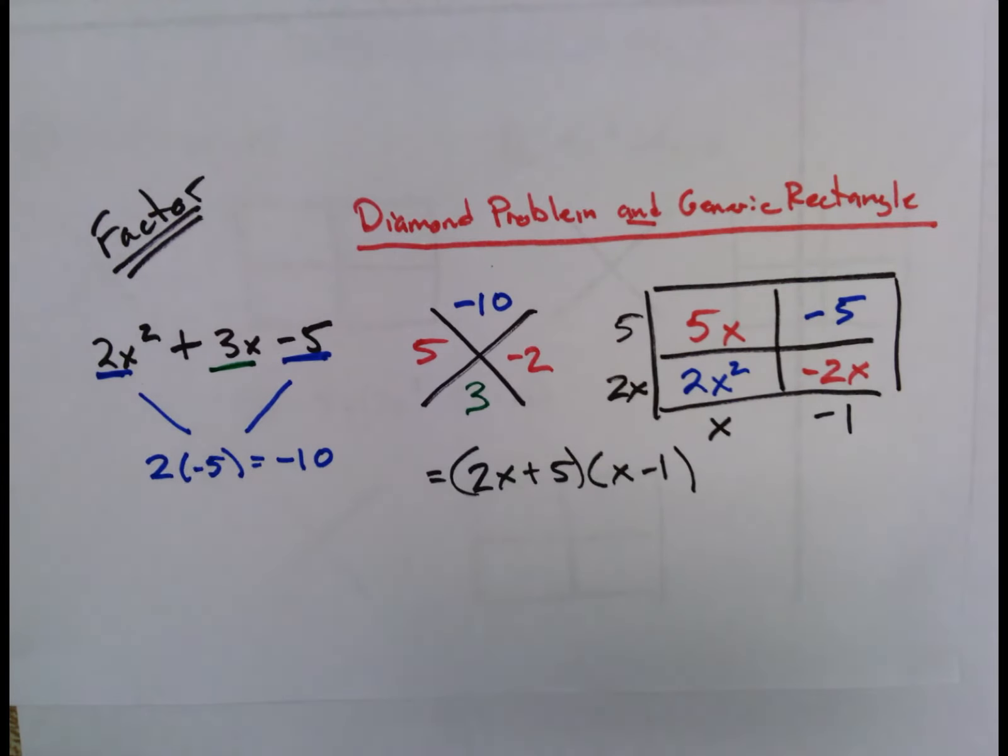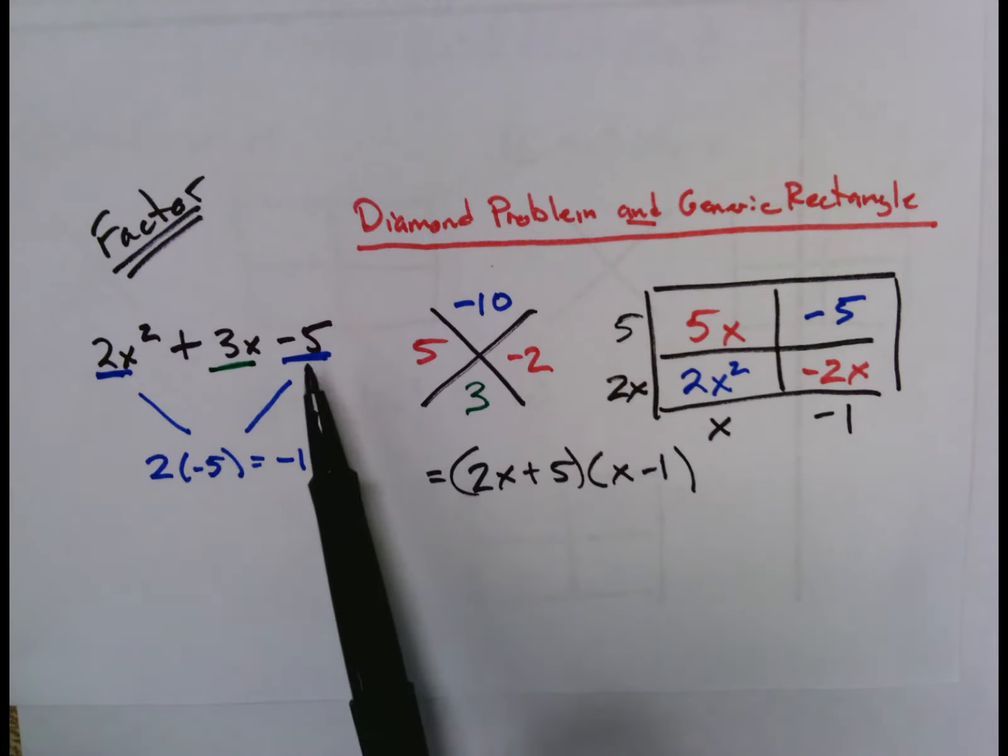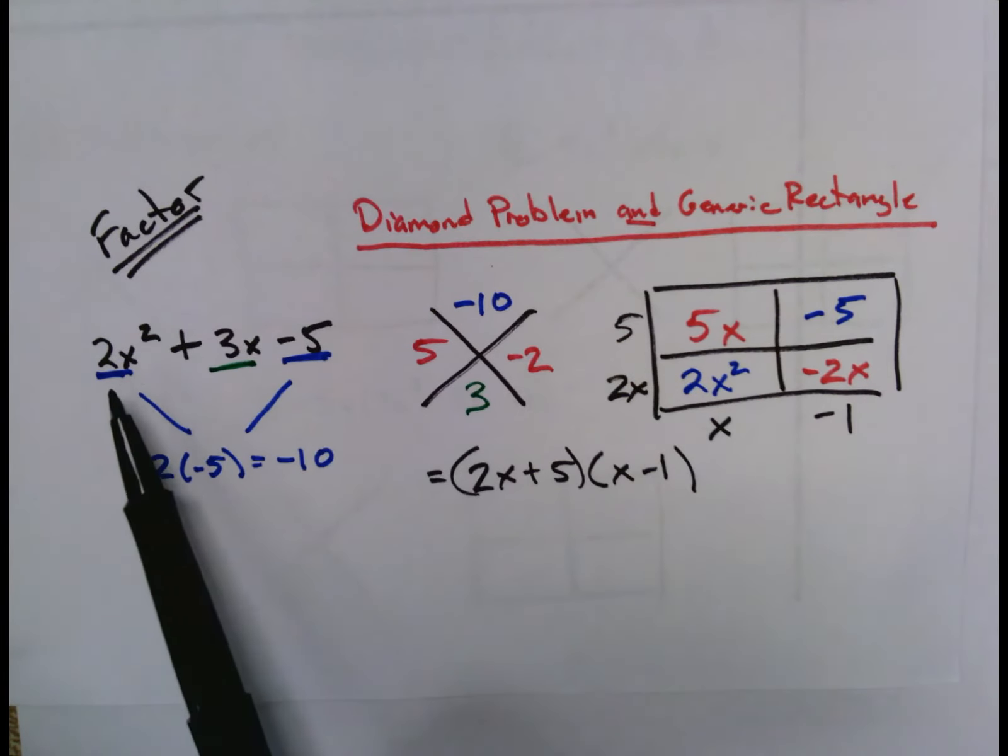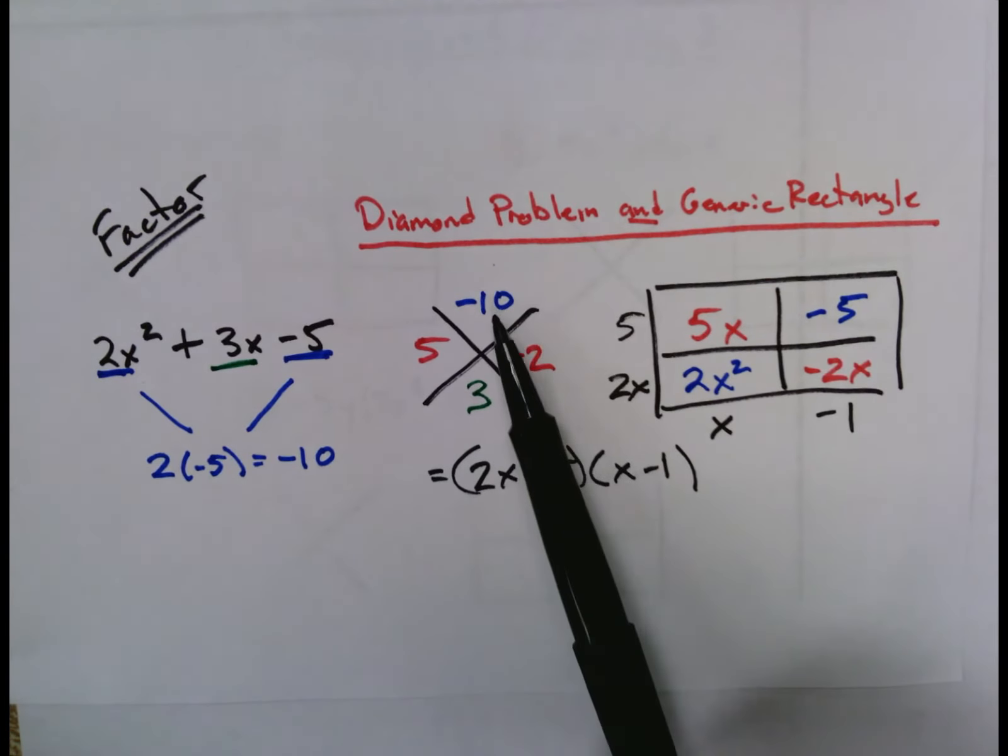And so the way we do that is we take our leading coefficient 2 and our constant -5, or A and C if you're thinking about a quadratic in standard form. You multiply those by each other, 2 times -5 to get -10. That's the value that goes in the top part of your diamond problem.